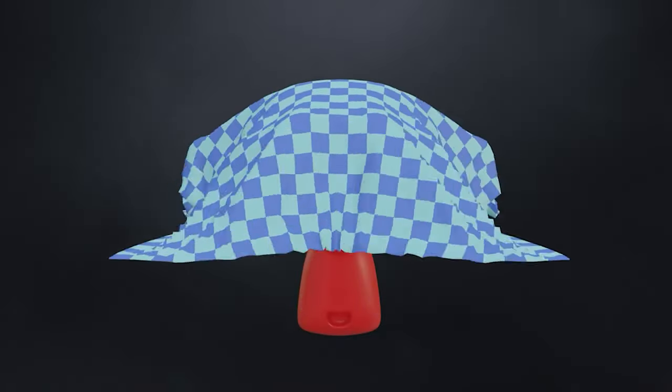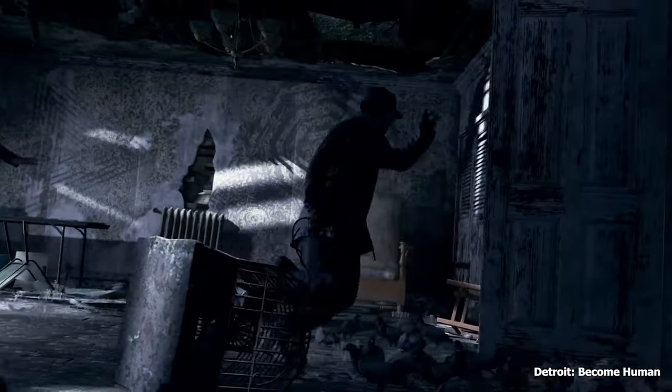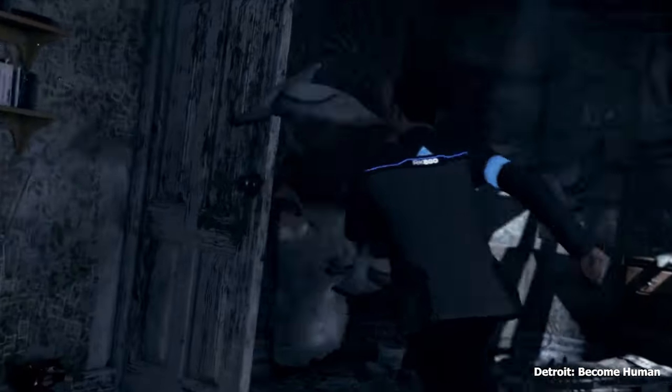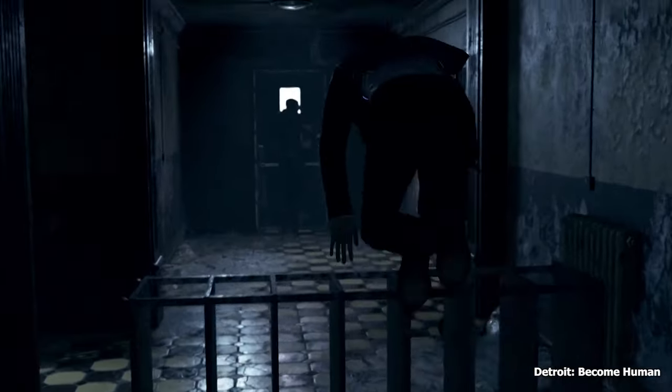For example, in the game Detroit: Become Human, the character's movement and facial expressions are simulated using Soft Body Dynamics. This allows for more realistic and emotive characters.